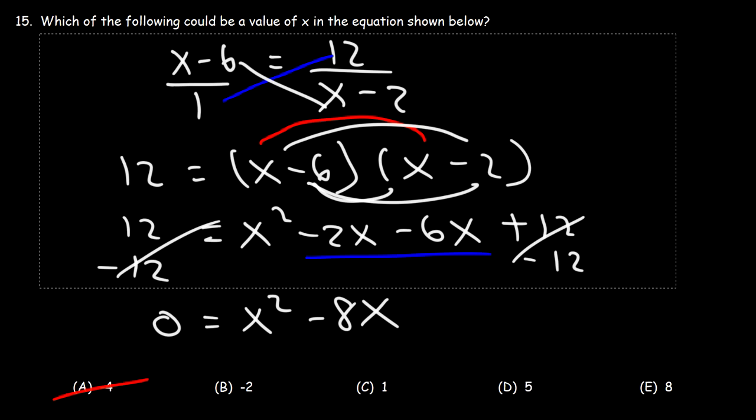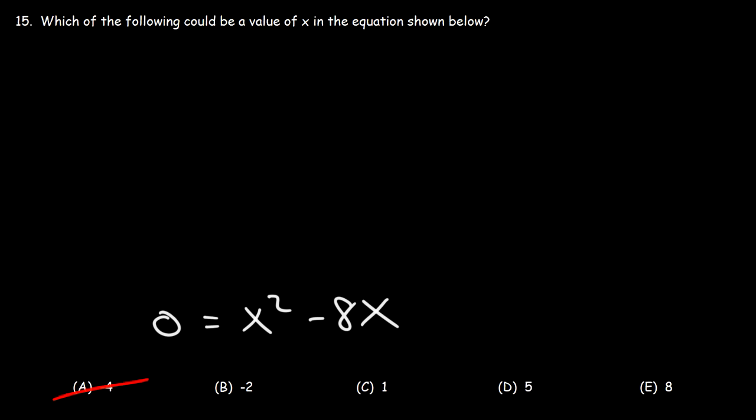Our next step is to factor the GCF, the greatest common factor, which in this case is going to be x. So we can factor this expression as x times x minus 8.